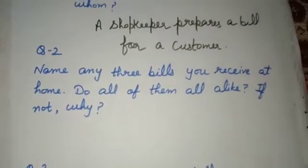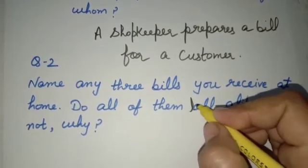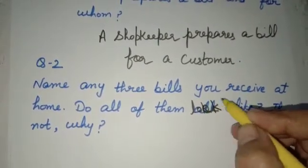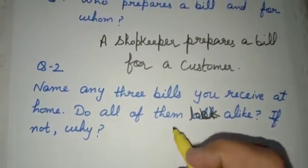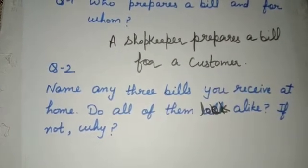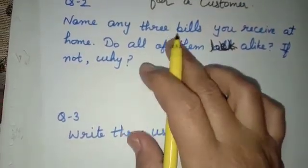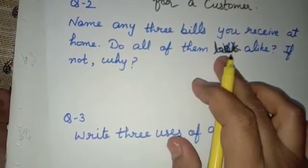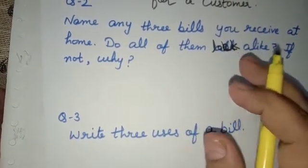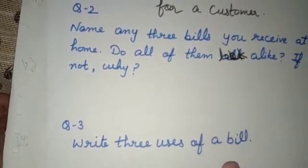Question two: name any three bills you receive at home. Do all of them look alike? If not, why? We studied at page number 169 the different kinds of bills — gas bill, electricity bill, ration bill. You can mention any three kinds of bills. Those bills are not the same and do not look alike, as the entries made in different bills are not the same. You will write the answer to this question on your own.